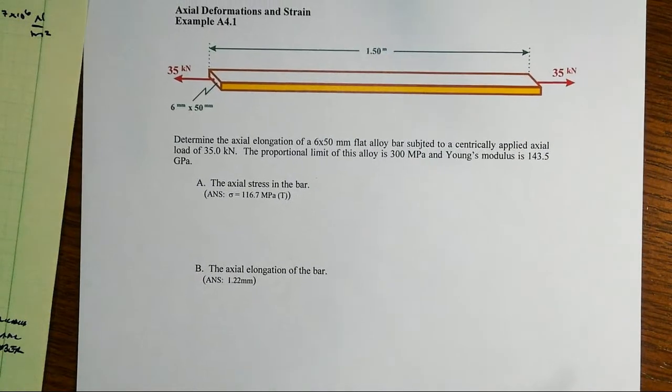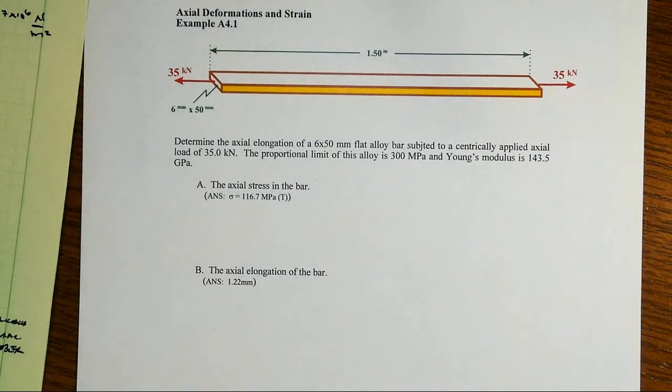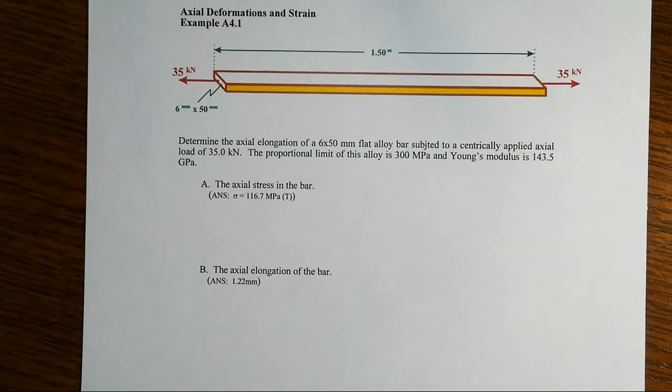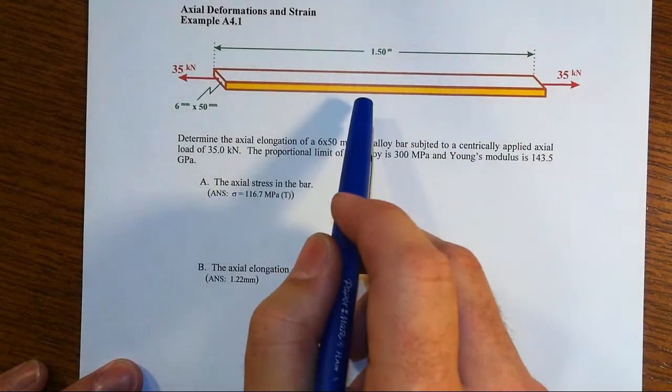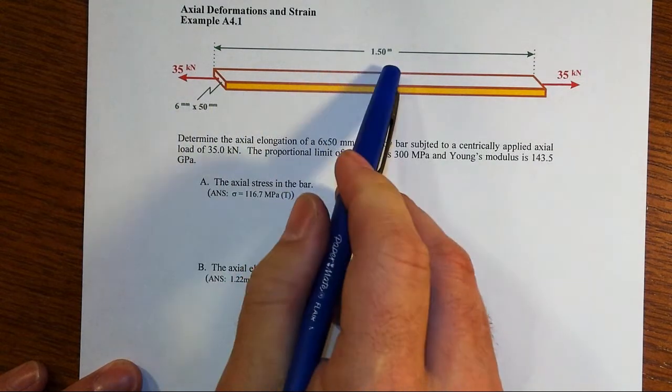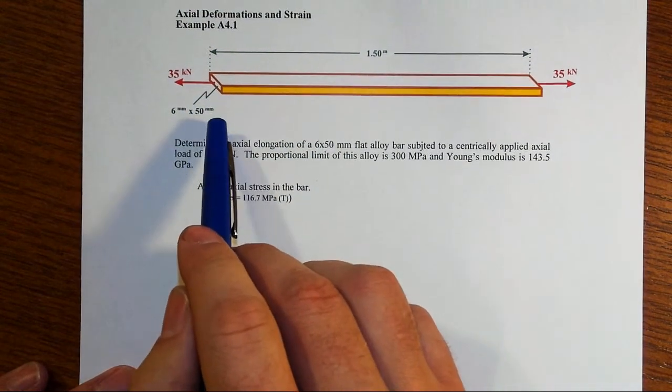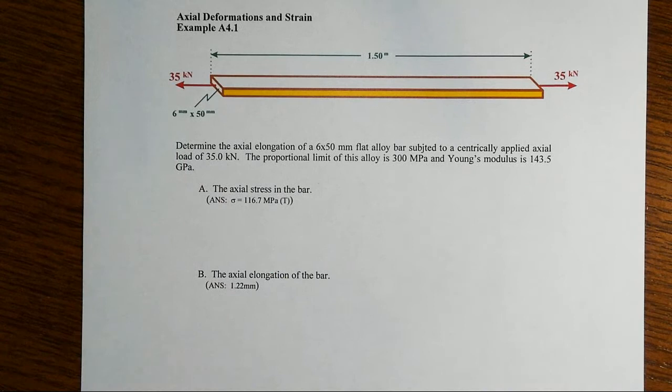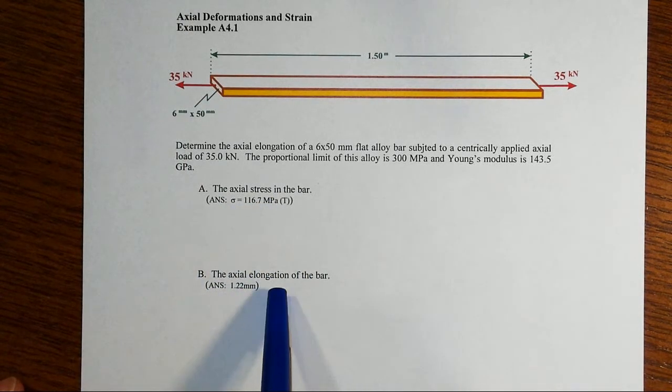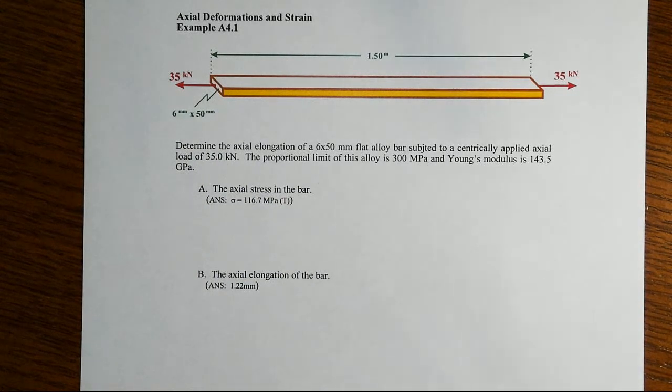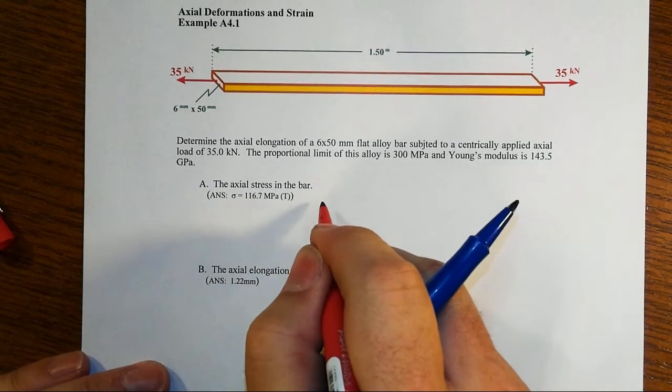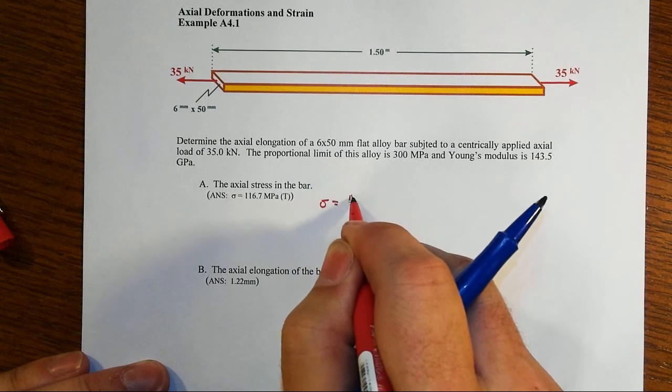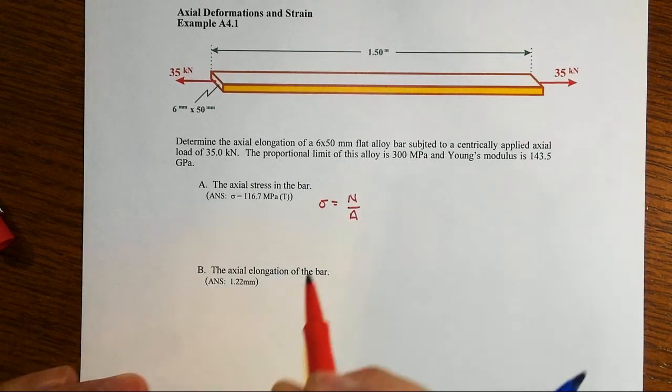Let's see how this is all going to get applied in an example. So here we've got a long bar, one and a half meters long. It's got a small cross section in comparison to that length, so it really is a long linear element. And so it's 6 millimeters by 50 millimeters. And we have a force of 35 kilonewtons applied on it. We're asked to find the axial stress. We're asked to find the axial elongation of the bar.